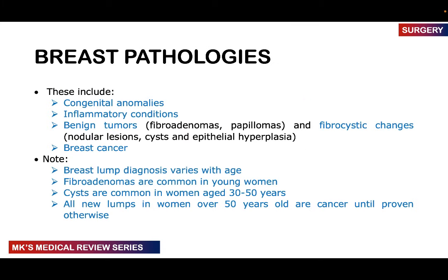Breast pathologies include congenital anomalies, inflammatory conditions (covered previously), benign tumors including fibroadenomas, papillomas, fibrocystic changes — nodular lesions, cysts, and epithelial hyperplasia — and breast cancer, which will be covered in a subsequent video. Diagnosis varies depending on age: younger people tend to have benign conditions; older people tend to have malignant conditions. Fibroadenoma is one of the most common pathologies in young women; cysts are common in women aged 30 to 50; all new lumps in someone above 50 are considered cancer until proven otherwise.